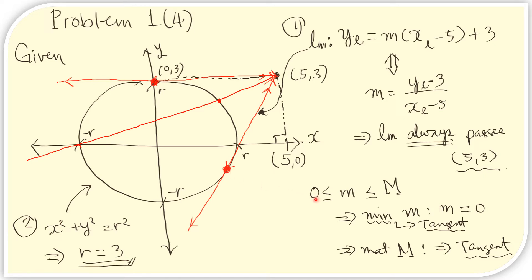We can also see that because 0 is the minimum possible value of m, we cannot tilt this line any further. If we tilt this line in one direction, it would not intersect the circle anymore. In the same way, if we tilt it the other direction, it would also not intersect the circle. Therefore, the worst possible cases of lines intersecting the circle are the tangent lines — the line tangent to the circle has slope 0, and the other tangent line has slope capital M. They occur when the slope is minimum at 0 and maximum at capital M.